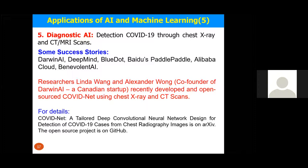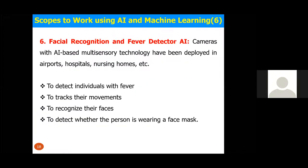The sixth scope involves facial recognition and fever detection — for example, in airports and large gathering places, using cameras to detect individuals with fevers, track their movements, recognize their face, and detect whether a person is wearing a face mask or performing proper hygiene.